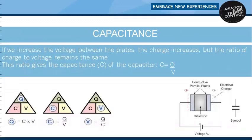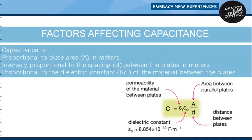If we increase the voltage between the plates, the charge increases. But the ratio of charge to voltage remains the same. This ratio gives the capacitance. So capacitance C equals charge divided by potential: C = Q/V.